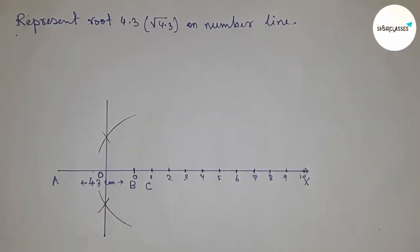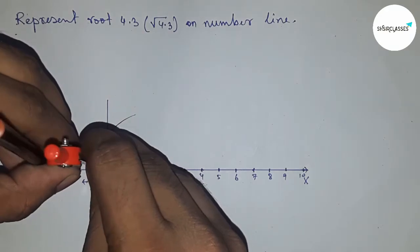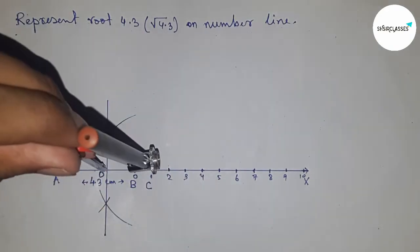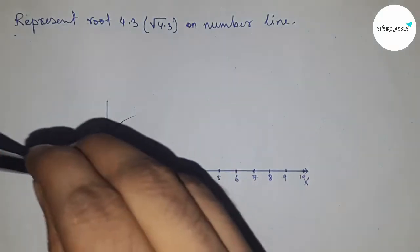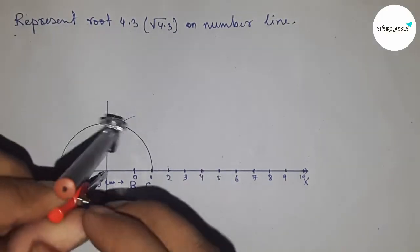Next, we have to draw a semicircle. Taking the length OA and OC and drawing a semicircle. It is a semicircle.